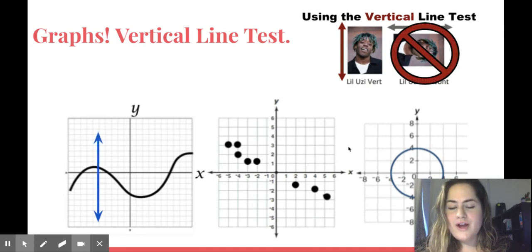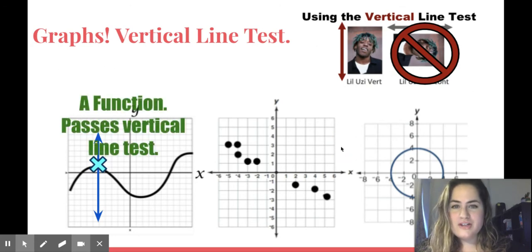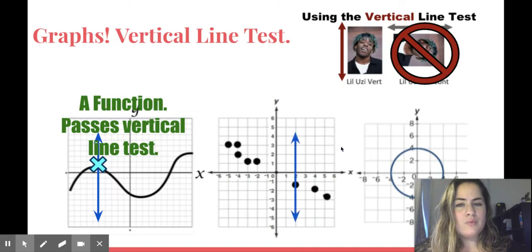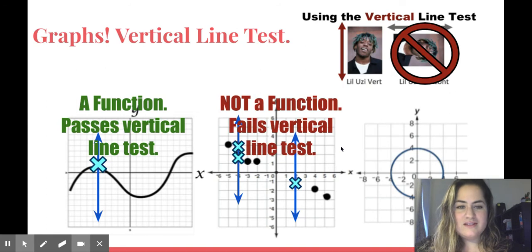So we're going to use the vertical line test. You draw a vertical line through your graph. Count how many times it hits the graph. If it hits once, that means nothing repeats. It's a function. It's kind of important where you draw your line. You want to draw your line where there might be an issue. So my first line here looks like it works. But if I draw my line here, it hits twice. So that fails. Not a function.